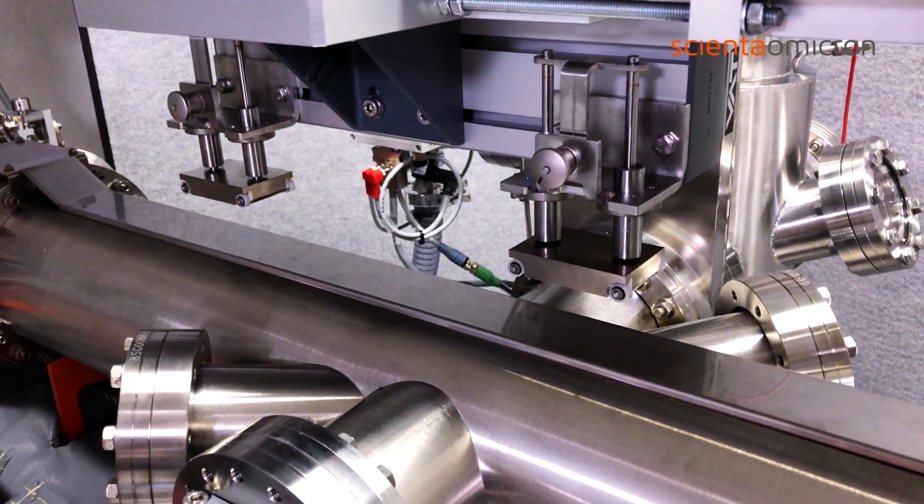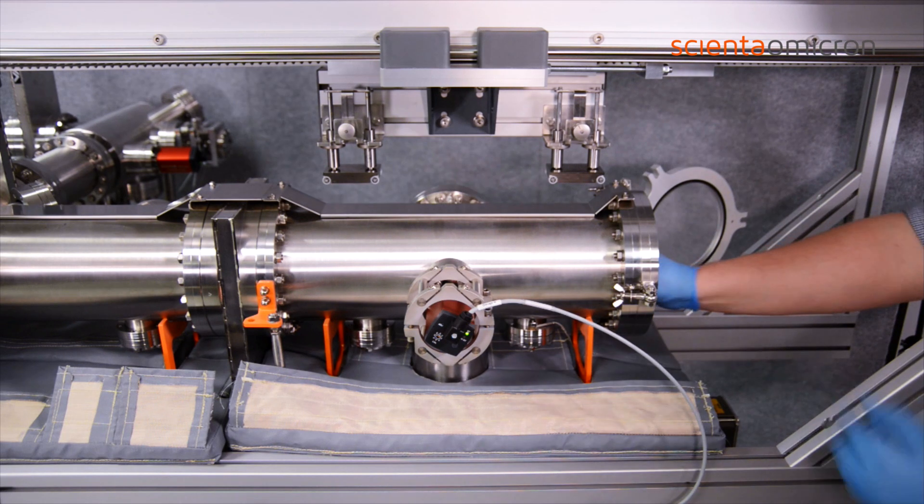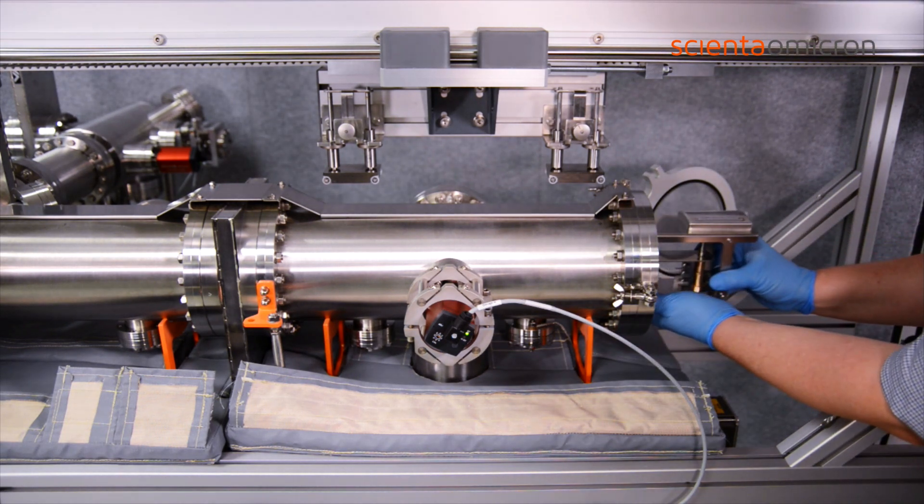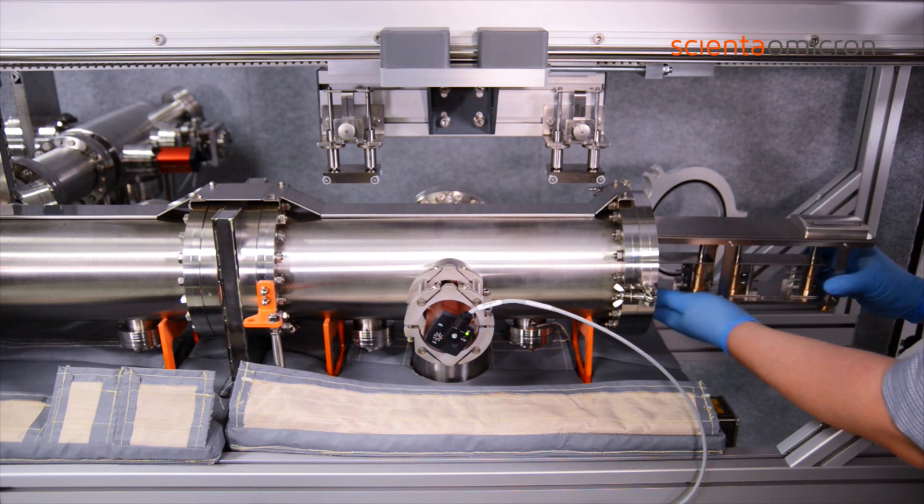Gate valves can separate sections, minimizing cross-contamination and isolating subsystems for servicing. Multiple linear transfer lines can then be easily extended or integrated with rotary distribution chambers.